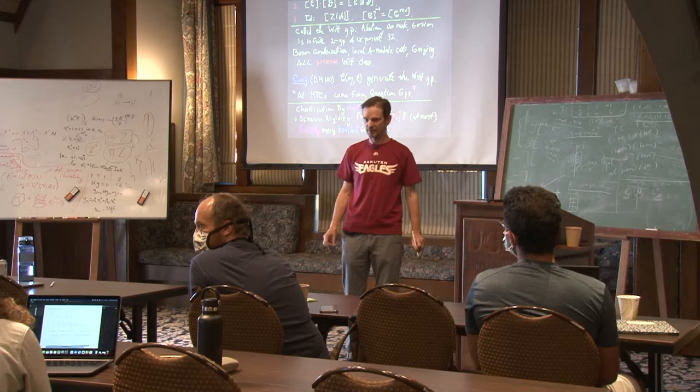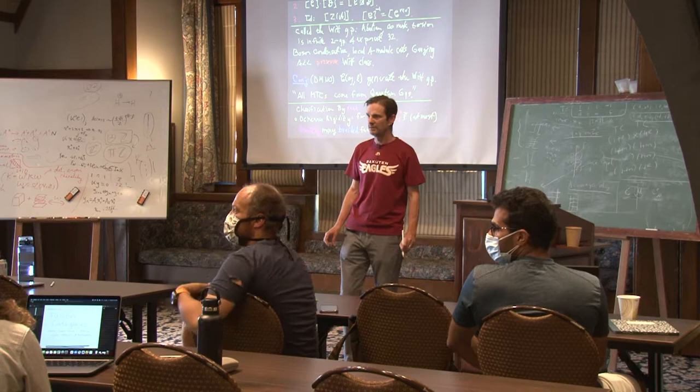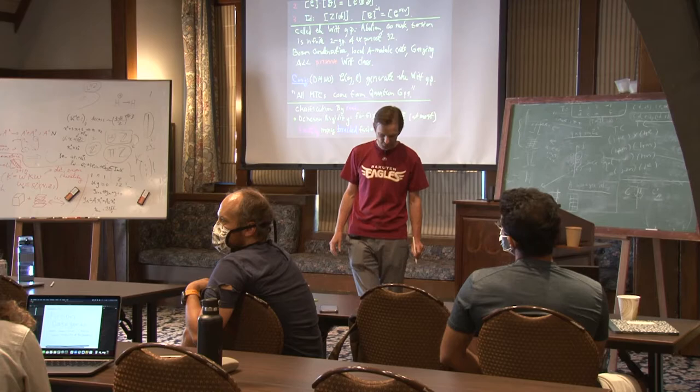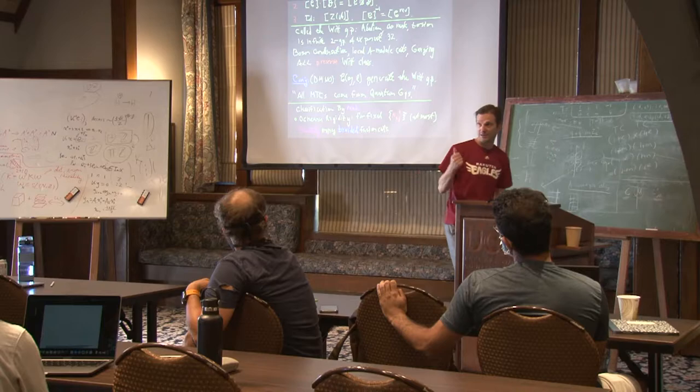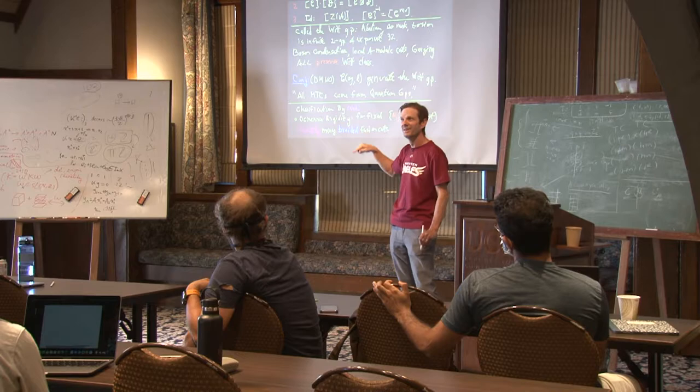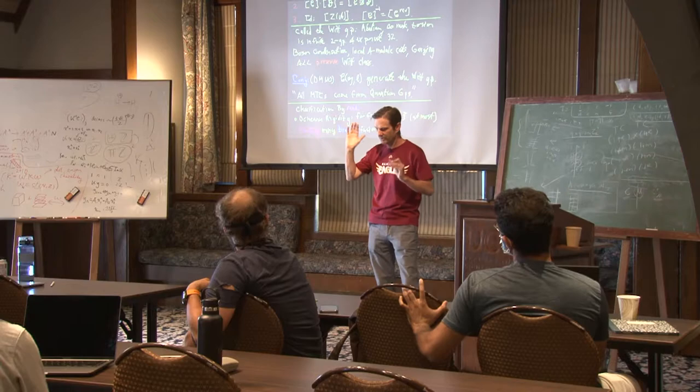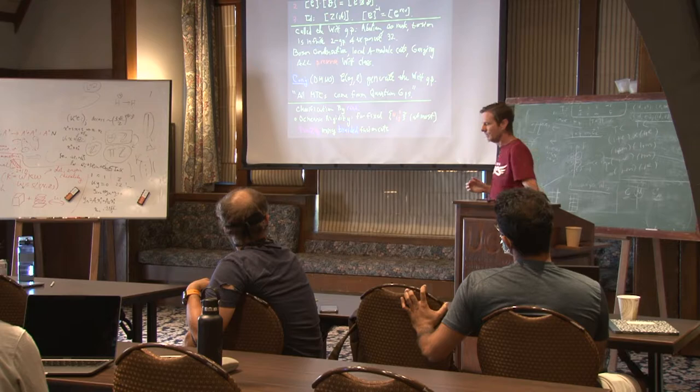The sixteen-fold way — which involves a fermion and a flux — illustrates that E8 has order sixteen in the Witt group. Any of the eight E8 categories has order sixteen. The element of order 32 is a square root of E8. We wrote a paper where we showed there are infinitely many such square roots — these are SO(N) at odd level N — and it's a recent result.